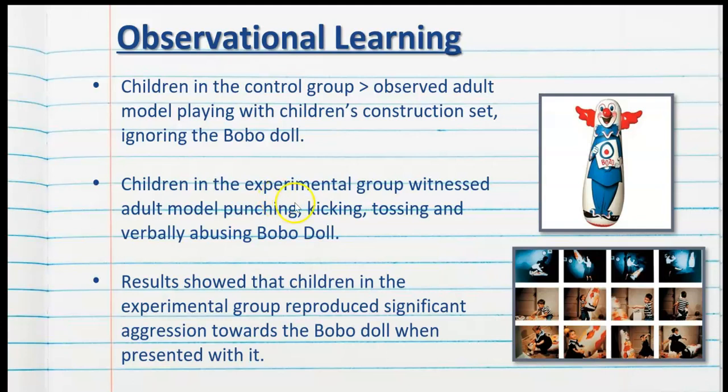The results showed that the children in the experimental group reproduced significant aggression towards the Bobo Doll when presented with it — in other words, what the children saw, the children did. This was actually very unexpected because the thinking at the time was that witnessing violence or aggression purged someone from wanting to do it themselves. So these results were very significant.